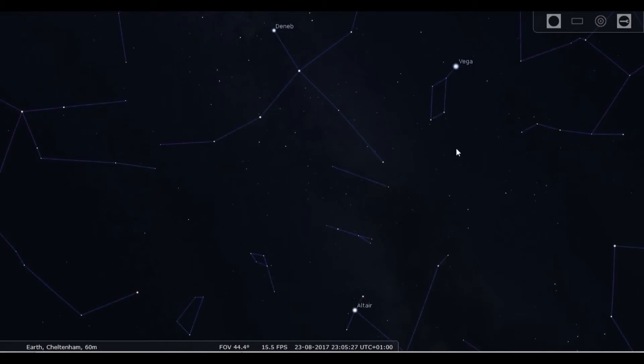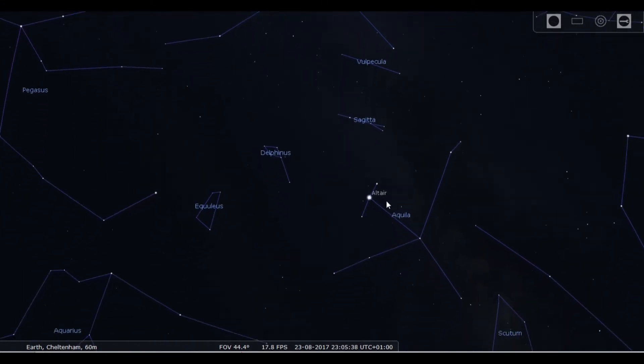If I put the constellation lines on you'll see that Vega is actually in the constellation of Lyra, Deneb in the constellation of Cygnus and Altair is in Aquila the eagle. I always think that Altair is perhaps one of the easy ones to find because it's flanked by these two relatively bright stars as well and you might even see this little asterism here which is Delphinus.